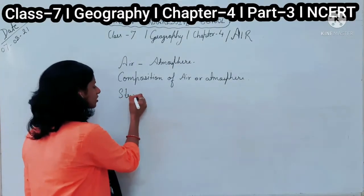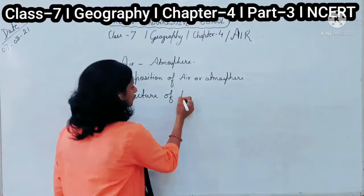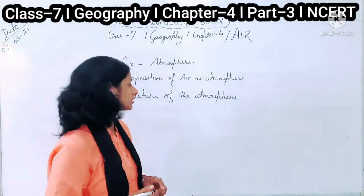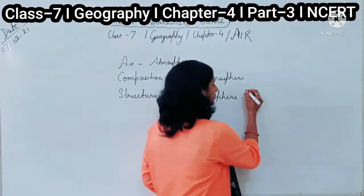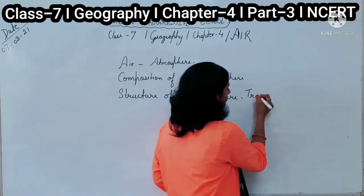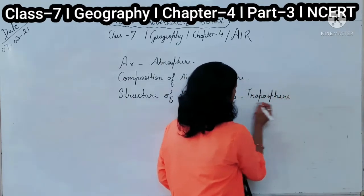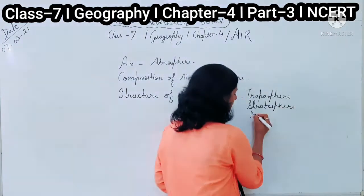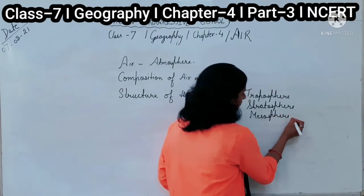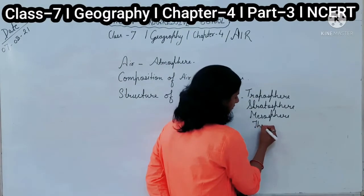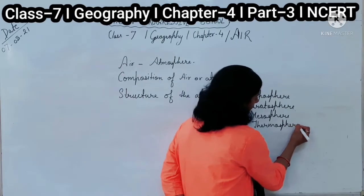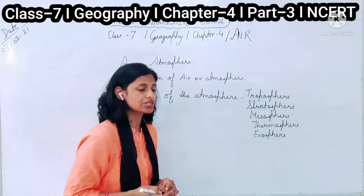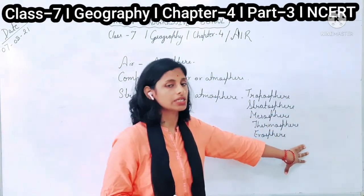We have also discussed about the structure of the atmosphere. In the structure of the atmosphere, we discussed about five layers: the first layer, the second, the third, the fourth — the thermosphere — and the last is the exosphere. We have discussed about why they are important in our atmosphere.